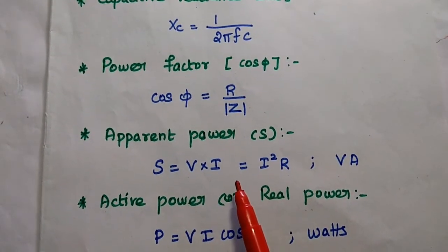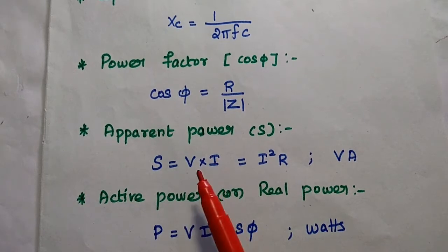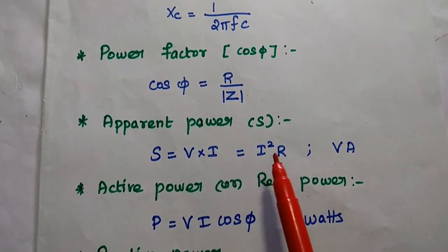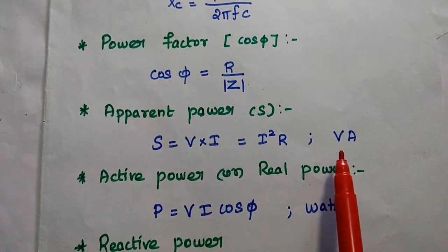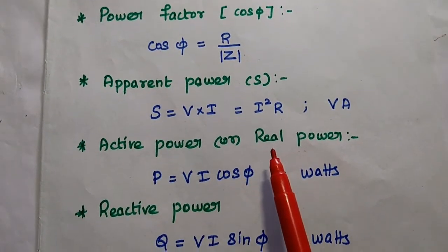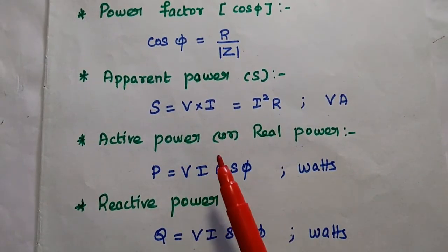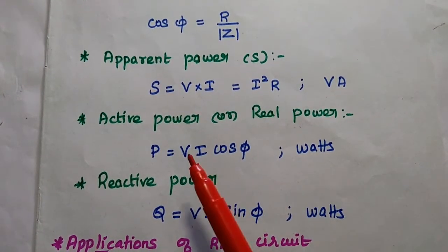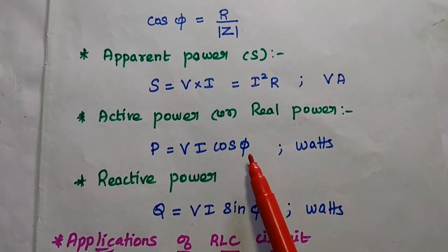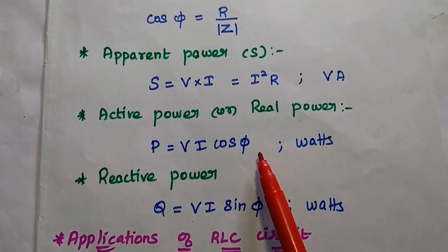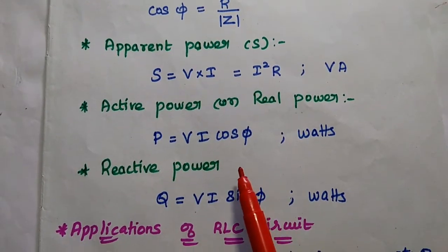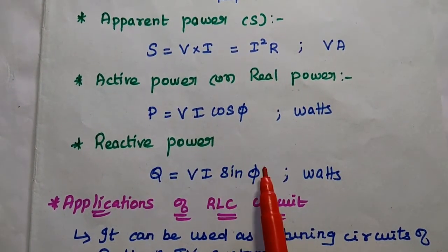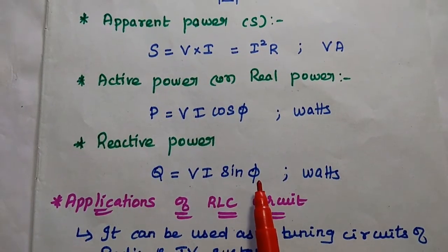The apparent power S = V · I, also written as I²R or V²/R, with unit volt-ampere. The active power, also known as real power, is due to the resistive element alone: P = V · I · cos φ, with unit watts. The reactive power is due to the reactive elements L and C: Q = V · I · sin φ, with unit VAR.